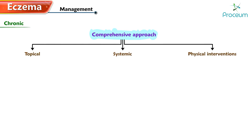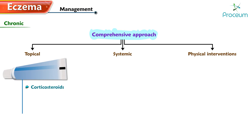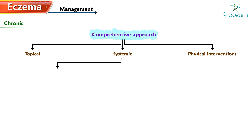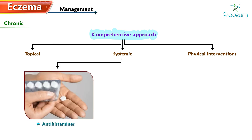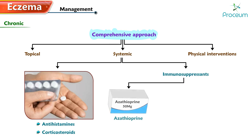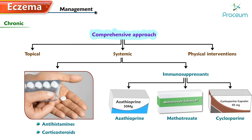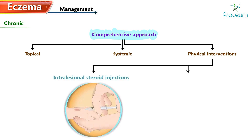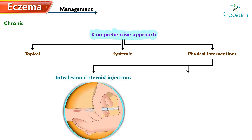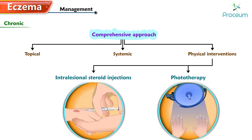Chronic eczema involves a comprehensive approach encompassing topical, systemic, and physical interventions. Topical management includes topical corticosteroids, tacrolimus, and pimecrolimus. Systemic management includes antihistamines, corticosteroids, and immunosuppressives such as azathioprine, methotrexate, and cyclosporine. Physical interventions are intralesional steroid injections and phototherapy.